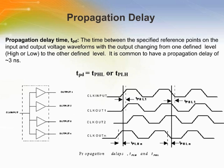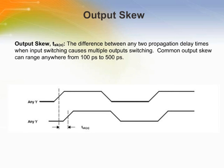Propagation delay is the time difference between a reference point on the input signal and the same point on the output signal, specifically when the output changes from one defined level, either high or low, to the other. Output skew is the difference between the propagation delay of each of the outputs. For example, in a fan-out buffer with a single input and two identical outputs, the output skew would be the difference between the propagation delay of each output.